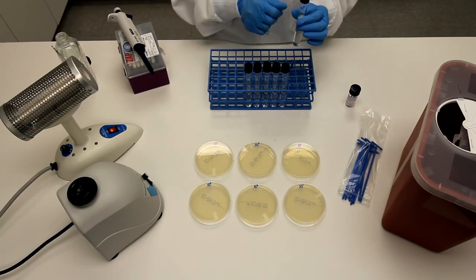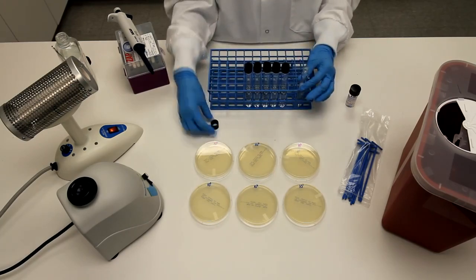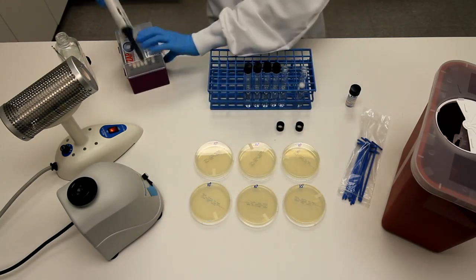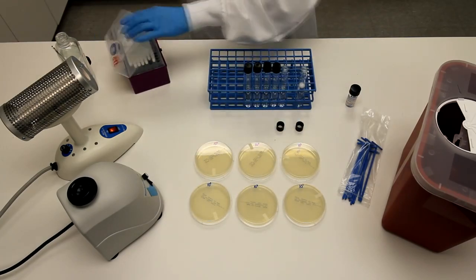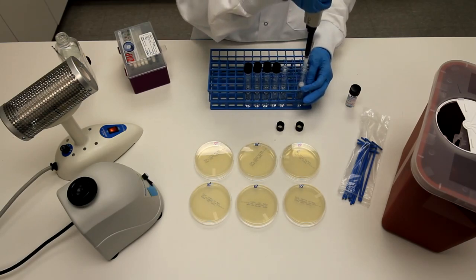Pipet 1 milliliter from the suspension into 9 milliliters of phosphate buffer. Repeat this process until all the tubes have been diluted. Be sure to hold your pipet vertically to achieve maximum accuracy.